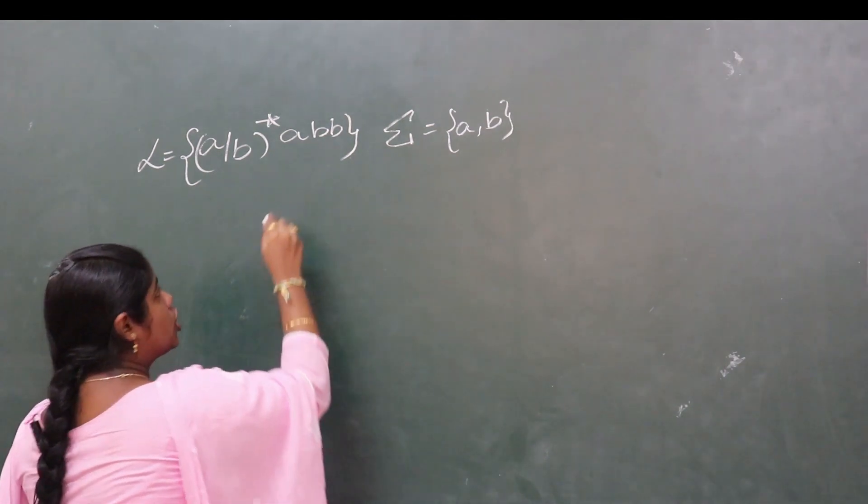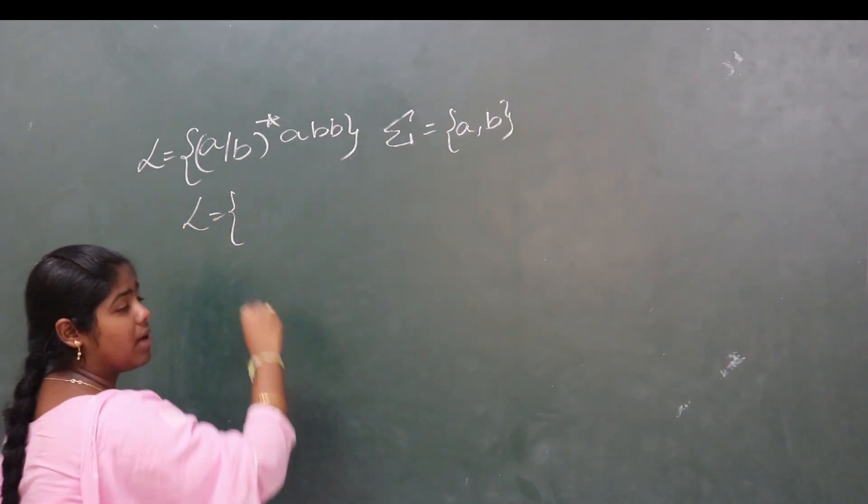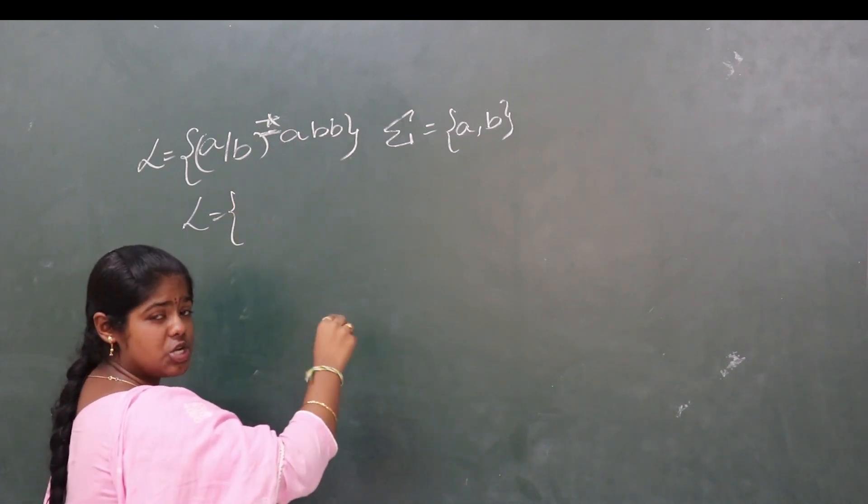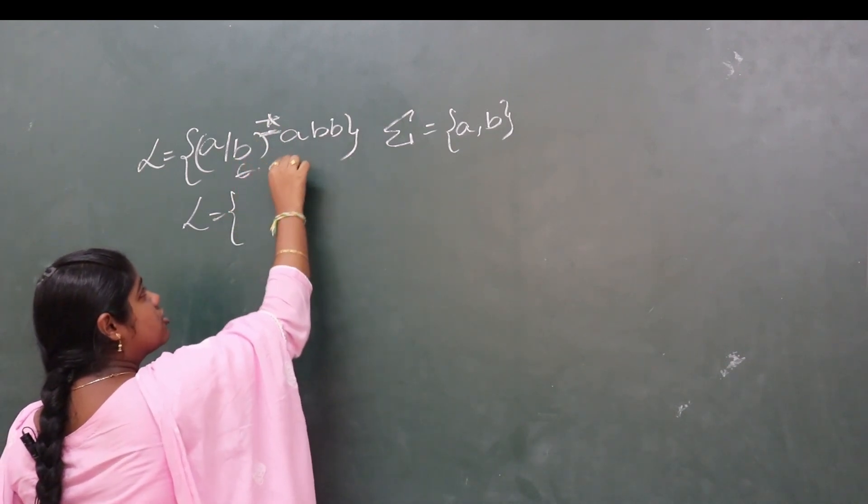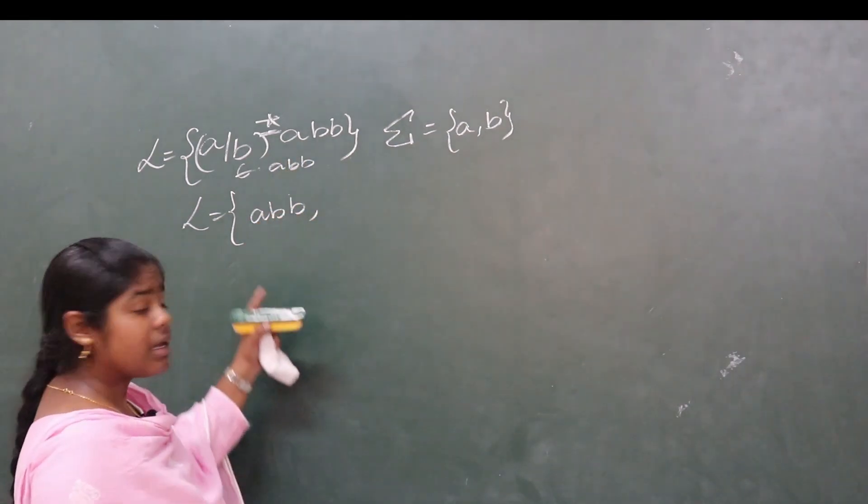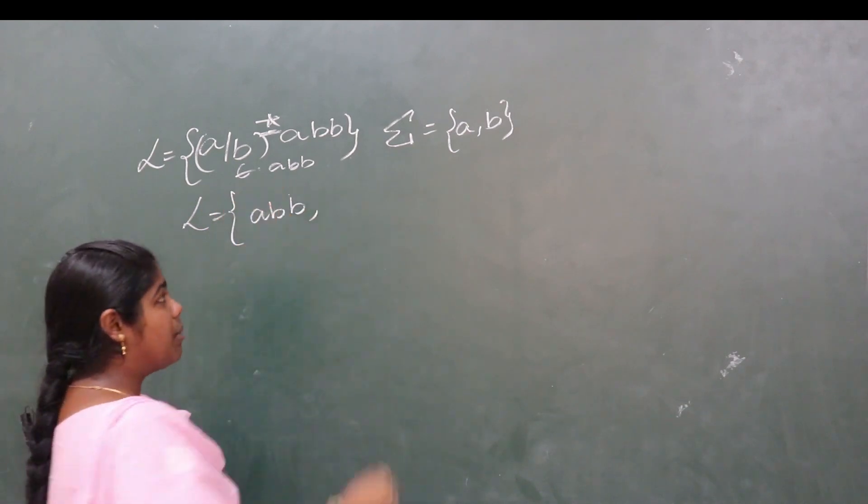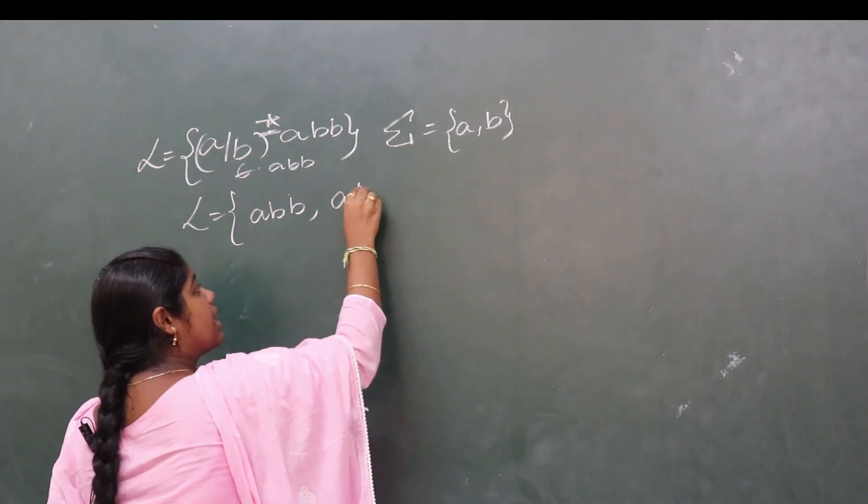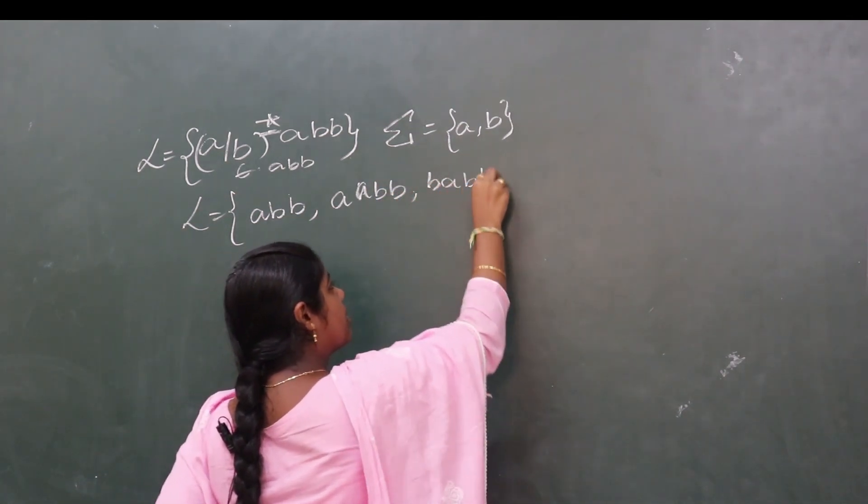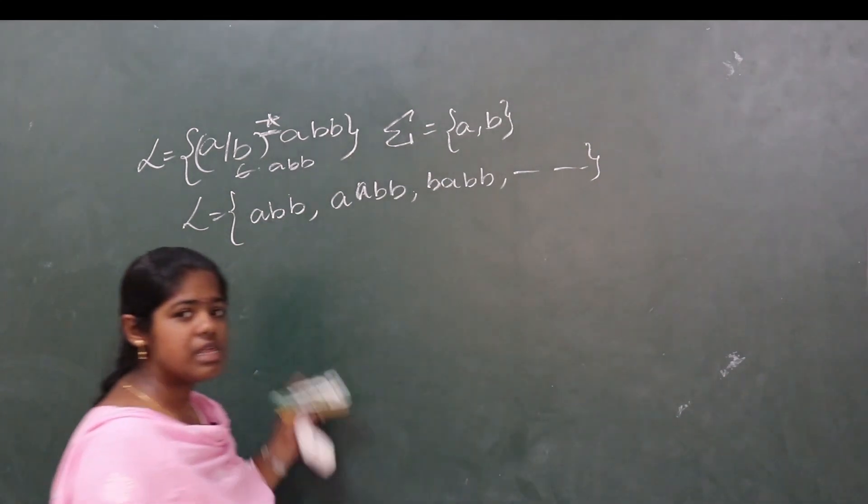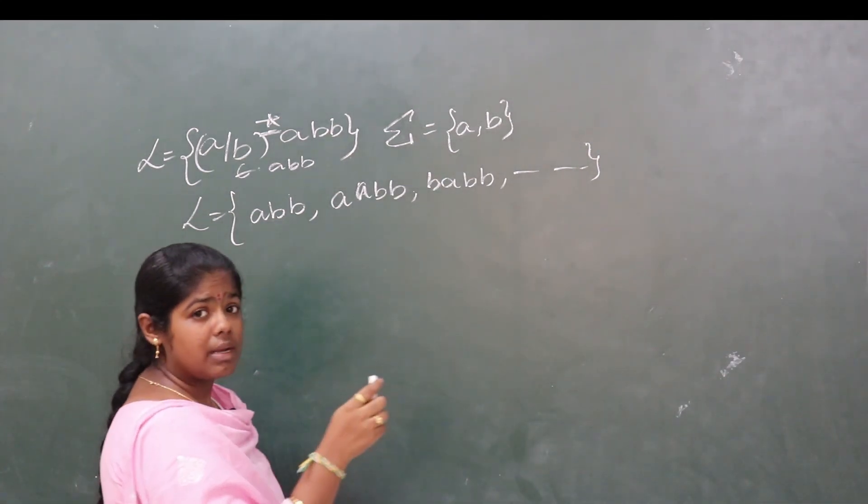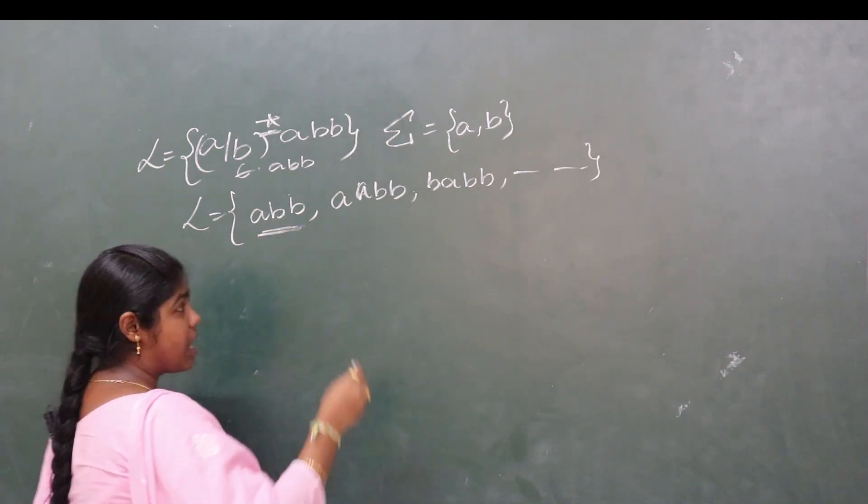First, the language in Kleene closure starts with the null string, then concatenating null with abb gives abb, followed by strings from (a|b)* like aabb, babb, and so on. We construct the automata for the first string abb.